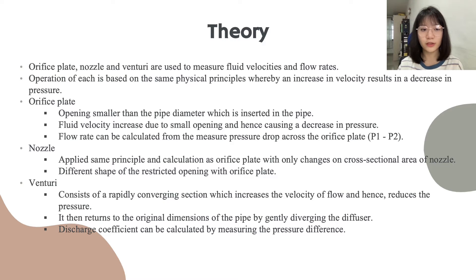And next for venturi. Venturi consists of a rapidly converging section which increases the velocity of flow and hence reduces the pressure. It then returns to the original dimension of the pipe by gently diverging the diffuser. Discharge coefficient can be calculated by measuring the pressure difference.